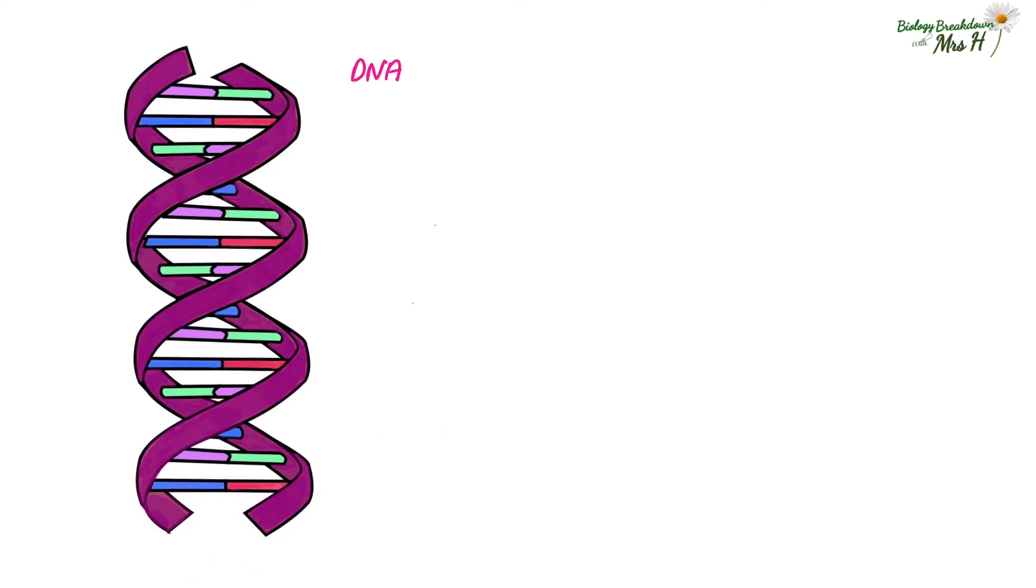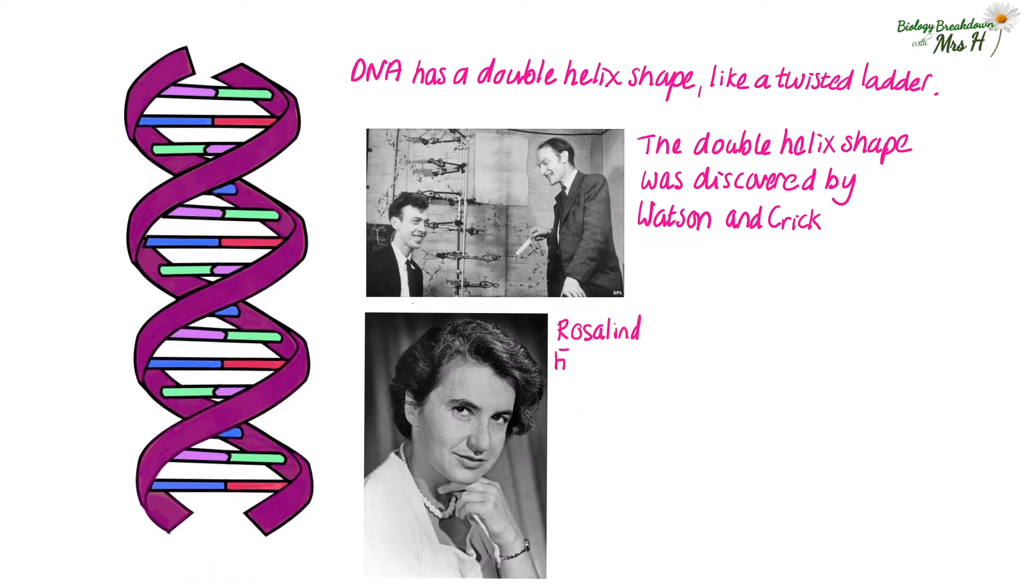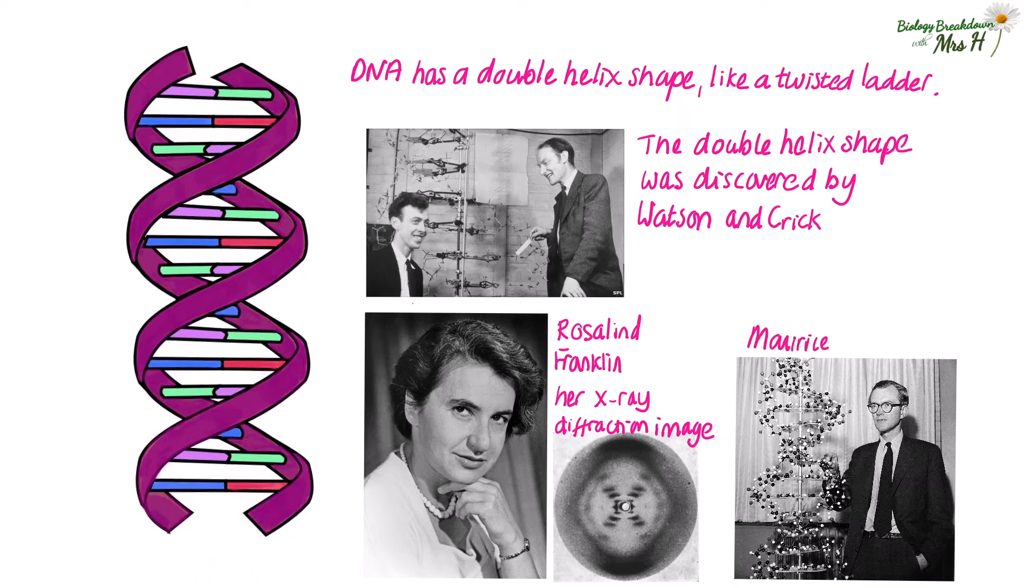DNA has a double helix shape like a twisted ladder and this shape was discovered by Watson and Crick with the help of Rosalind Franklin and her x-ray diffraction image and Maurice Wilkins.